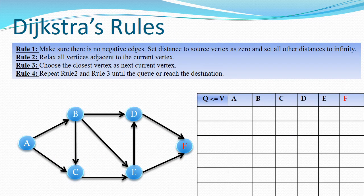Next, in this slide we are going to see the major rules for Dijkstra's algorithm, and then we'll apply those rules into the animation to visualize it. Rule one: make sure there are no negative edges in the graph. If you look at the edge weights chosen, all are positive edges — any edge or weight among the vertices or nodes is positive.